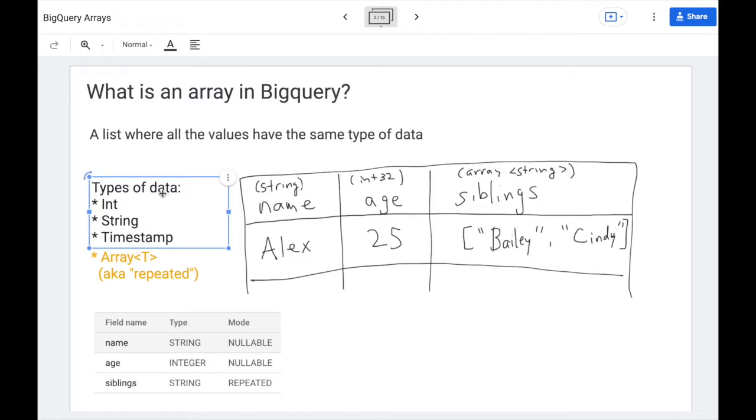An array in BigQuery is a list where all the values have the same type of data. Arrays are a more complicated data type that complements existing ones you're familiar with, such as integers, strings, and timestamps.